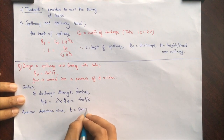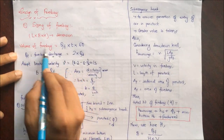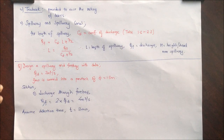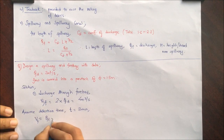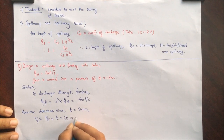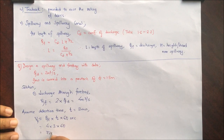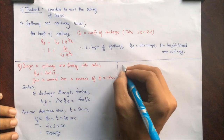Volume of forebay can be computed as Qf × T × 60, converting detention time in minutes to seconds. So Vf = Qf × T × 60 = 4 × 3 × 60, which comes as 720 meter cube. Now we have to calculate the height of the forebay.